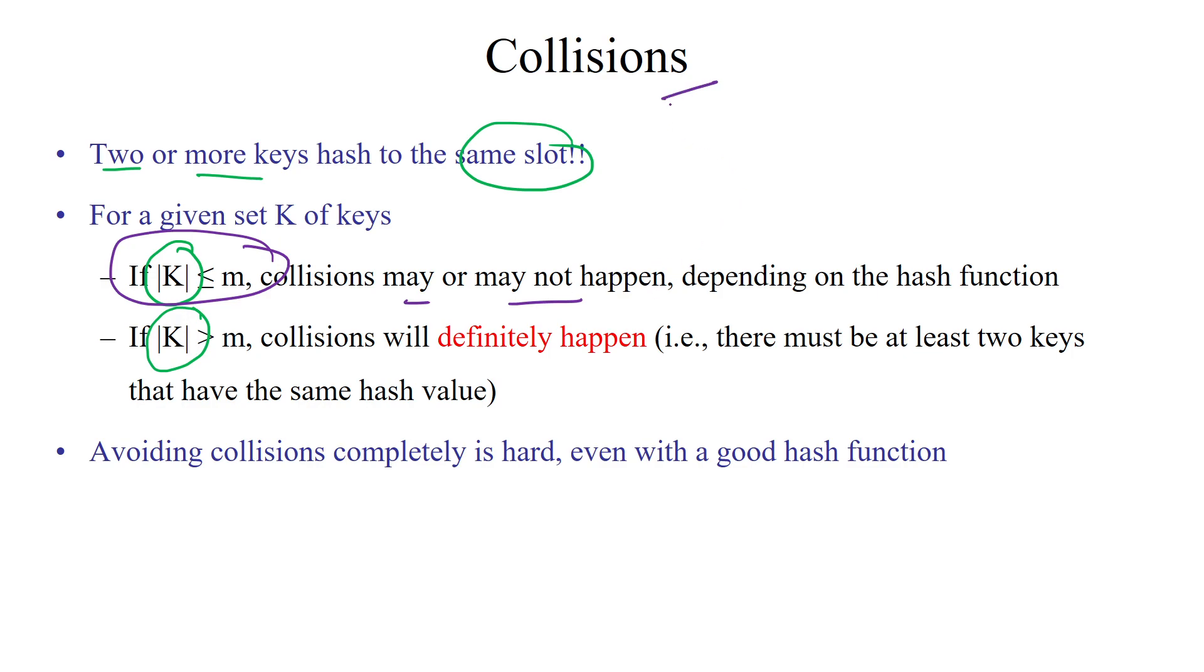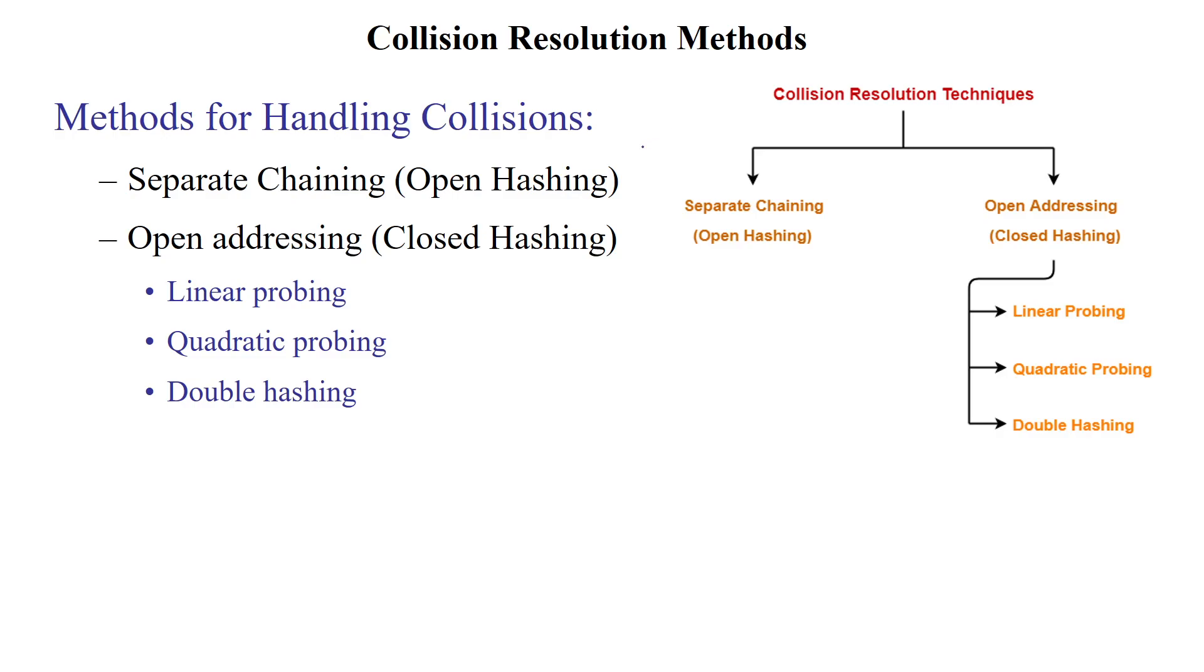This kind of collisions can be avoided by using two different approaches. One is open hashing, that open hashing is having another name separate chaining. And the second technique is closed hashing, other name is open addressing. This is having three more subdivisions: linear probing, quadratic probing, and double hashing. These methods, separate chaining and open addressing methods, are used to handle the collisions in hashing. Thanks for watching.